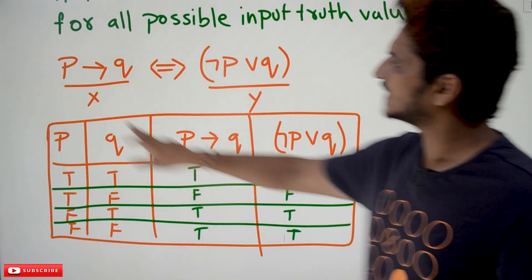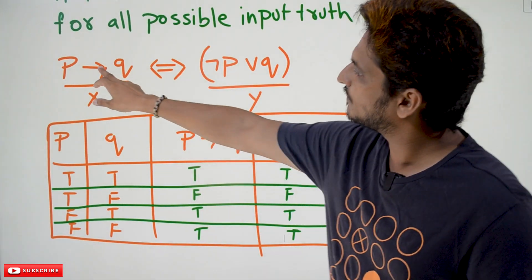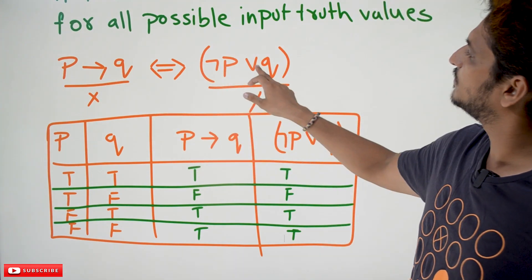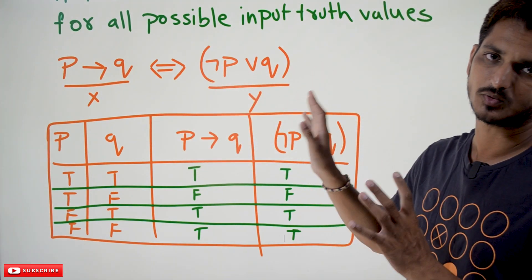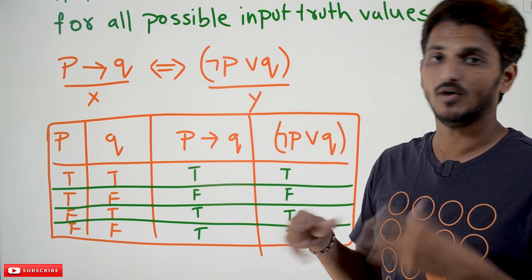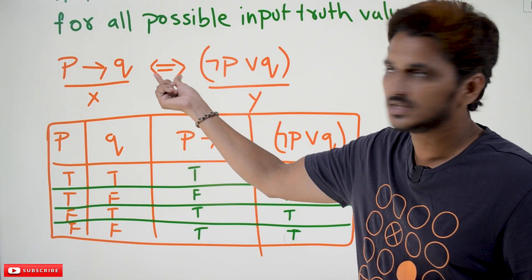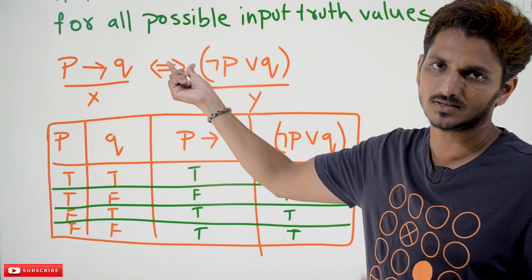Let us take an example. X, this is one proposition. Y, this is another proposition. P implies Q is one proposition. Negation P disjunction Q is another proposition. These two propositions are equal. When we are going to say that these two propositions are equal, that equal to symbol is given like this. This is what the equivalent symbol is.